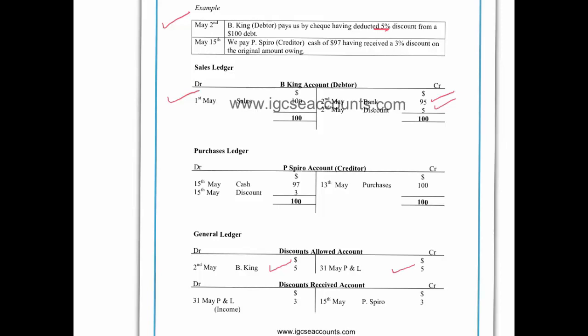For a creditor, the opposite will apply — the discount received will be a revenue. In this case, if we owe $100 to P Spiro our creditor and we take off 3%, which is our discount received, then we're only going to pay that person $97. We can see here that we've paid in cash, so we would credit the cash and debit P Spiro's creditor account in the purchases ledger.